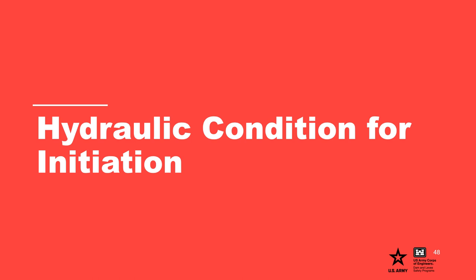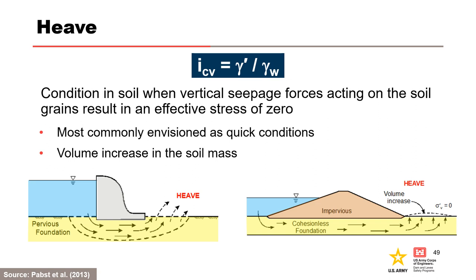Node 3 of the typical event tree assesses the likelihood that sufficient exit gradient exists to initiate backward erosion piping at an unfiltered exit. For backward erosion piping, there is a critical gradient above which a particle is detached—local or exit gradient considerations. For vertical exit conditions, heave is a condition when a saturated sand specimen subject to upward seepage suddenly decreases in density and increases in permeability. The vertical hydraulic gradient at this condition is referred to as the critical gradient, describing the gradient resulting in zero-effective stress—more commonly envisioned as quick conditions.